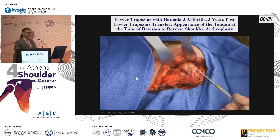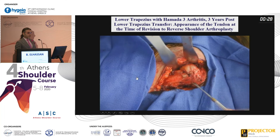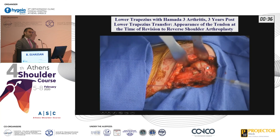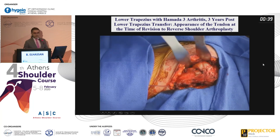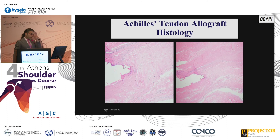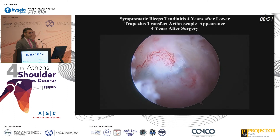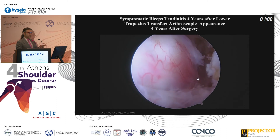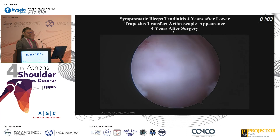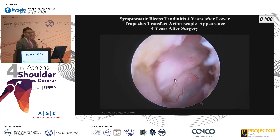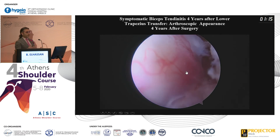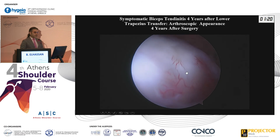This is a patient who had arthritis — Hamada grade three or more. She insisted on a lower trapezius transfer, did very well for three years, but at the time of a subsequent reverse, look at the lower trapezius tendon — it honestly looks like an infraspinatus, a very beautiful tendon. For this patient, they get excellent rotation after reverse because the lower trap is already in place. Biopsy shows living fibroblasts even though it's an allograft. I did not repair any rotator cuff except the lower trapezius, and the whole area is completely covered. For this specific indication, I don't find an indication to add SCR.